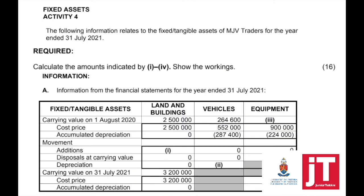Looking at this activity, we need to calculate the amounts indicated by 1 to 4 and make sure that you show your workings. This is a similar type of question that was asked before. This is what you can expect in Grade 12 when completing tests and exam papers. In Grade 11 and Grade 10, the focus was completing the Tangible Asset Note from beginning to end. Now we are just asking bits and pieces for you to solve. So it's very important that you understand this note.